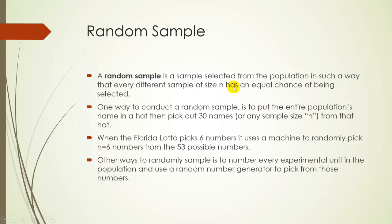Before moving on, n can be any number — 30, 50, 100, 1000. The letter n is a symbol statisticians use for sample size, and we'll use that symbol throughout the course. Since we're defining sample size as n right now, it might be a good idea to develop one sheet of paper as a symbol dictionary to keep track of what symbols mean what. So write down: lowercase n equals sample size.